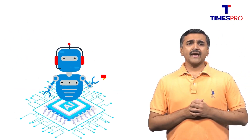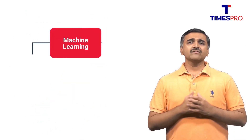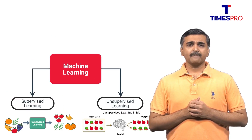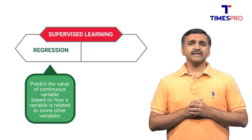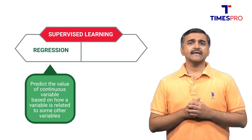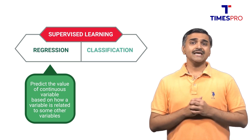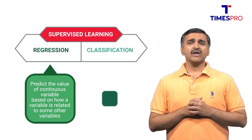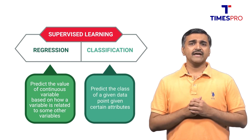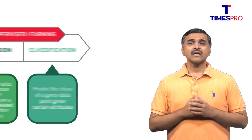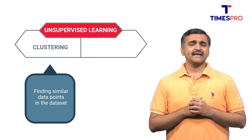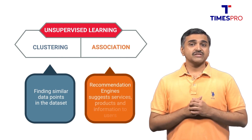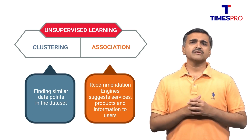Now let's do a recap on the common machine learning tasks. We have supervised and unsupervised learning. Regression is a task under supervised learning where we predict the value of a continuous variable based on how the variable is related to some other variables. Classification is also a supervised learning task where we predict the class of a given data point given certain attributes. Clustering is an unsupervised learning task where we find similar data points in the dataset. Recommendation engines suggest services, products and information to users.